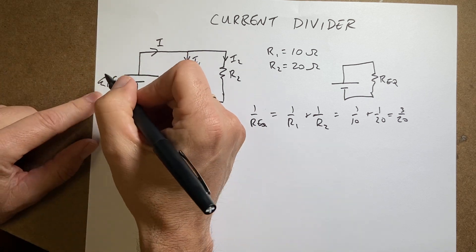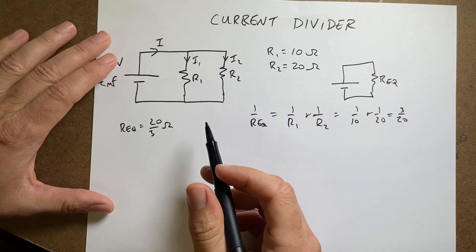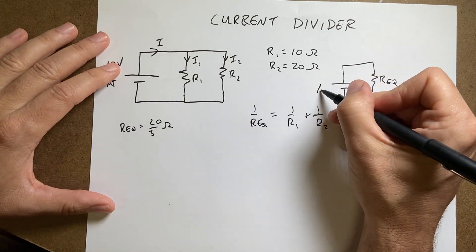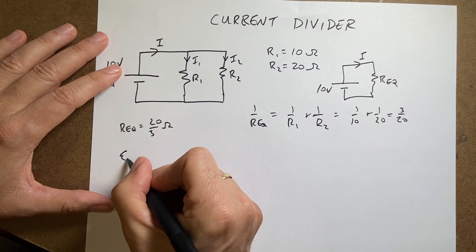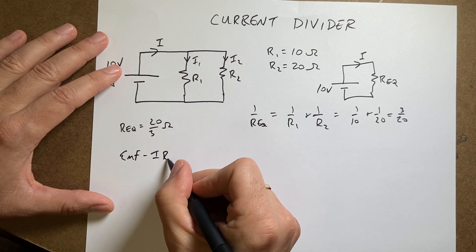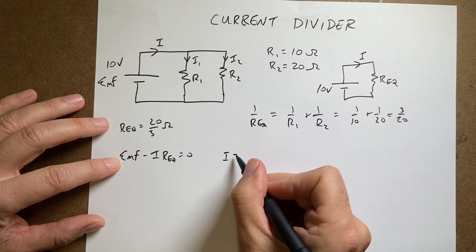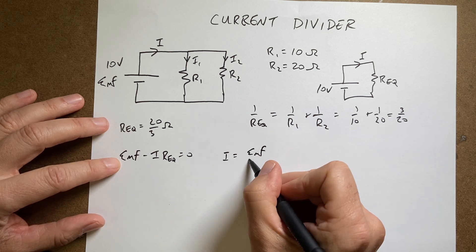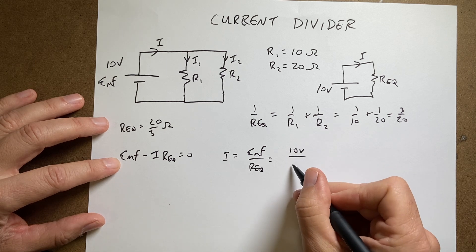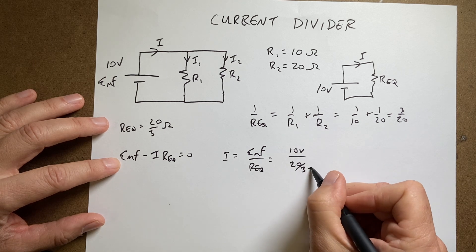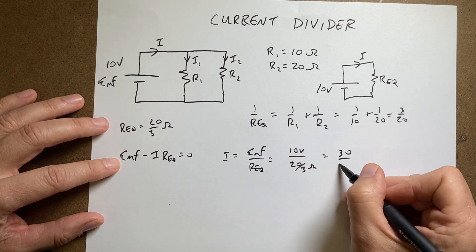Now let's say EMF is 10, just to make it easier. Now if this is 10 volts and I want to find the current I, I could say EMF minus I R equivalent equals 0. So now I get I is EMF over R equivalent. So that would be 10 volts divided by 20 thirds ohms equals 30 over 20 amps.